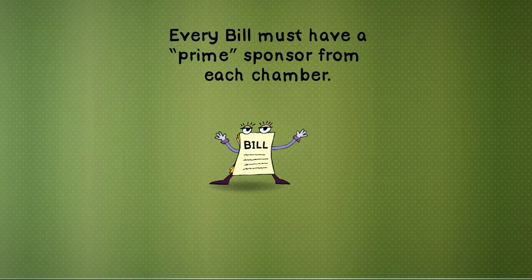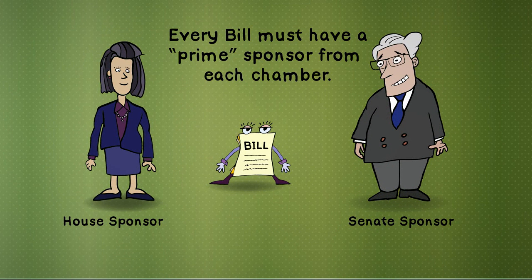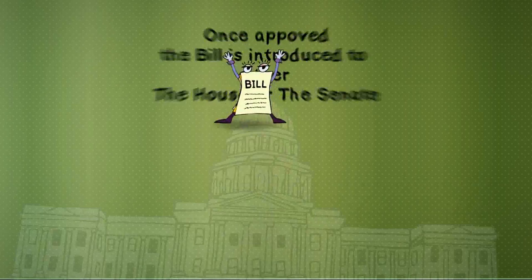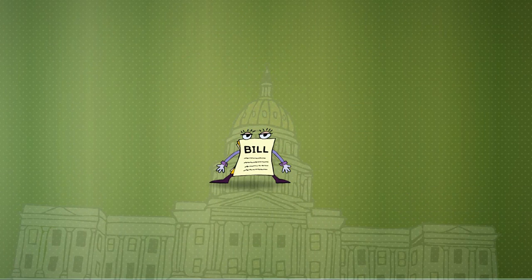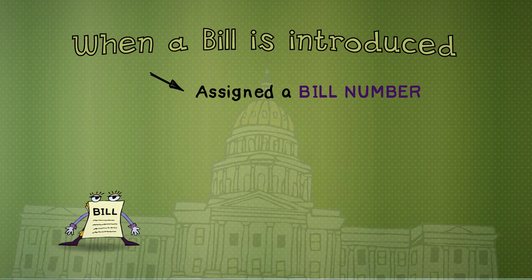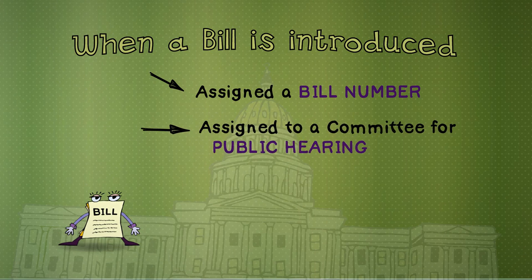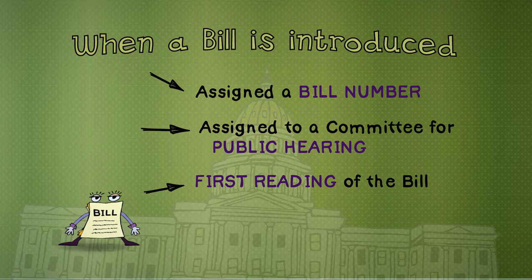Every bill must have a prime sponsor from each chamber before a draft bill can be created. Once the initial sponsor approves the draft bill, the bill is delivered to either the House or Senate to be introduced. When a bill is introduced, it is assigned a bill number and assigned to a committee for public hearing. The title is read aloud by the reading clerk. This constitutes the first reading of the bill.